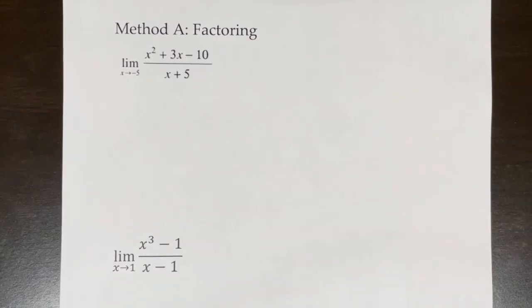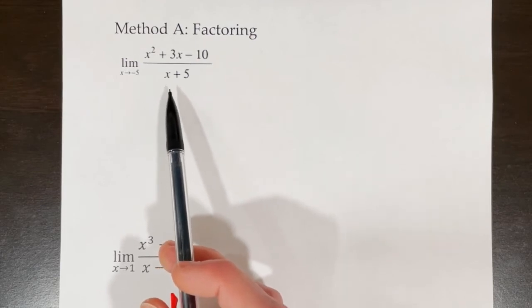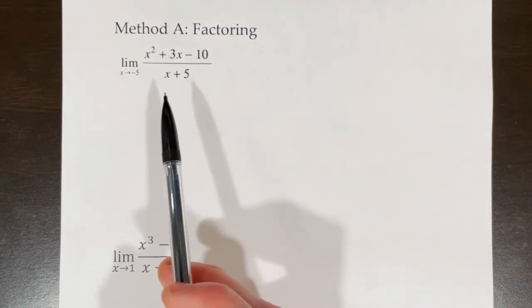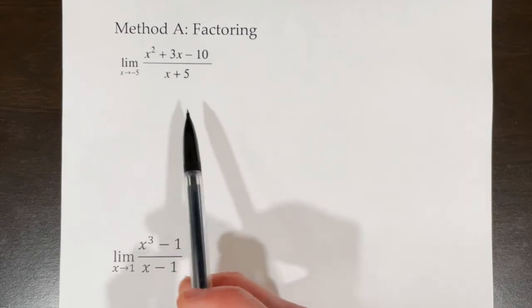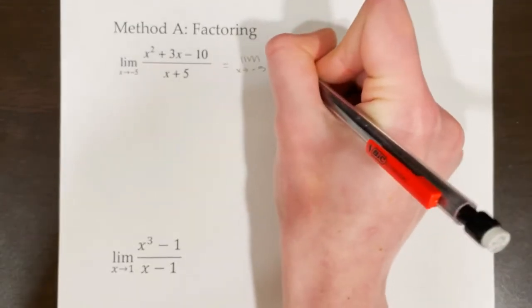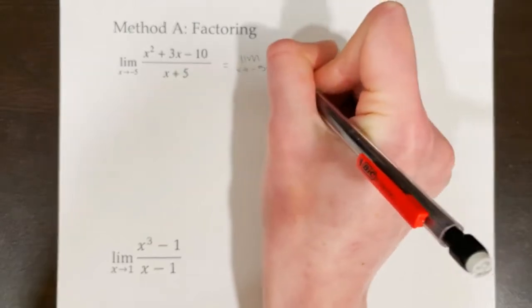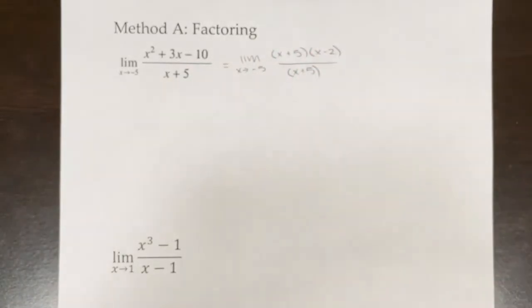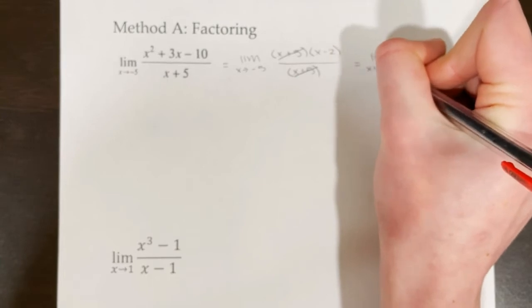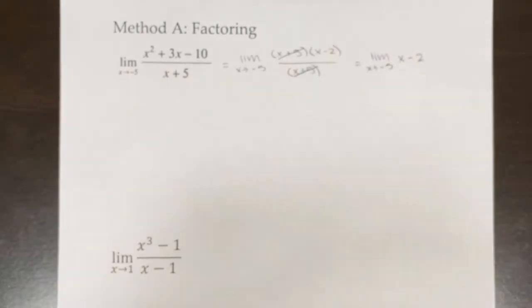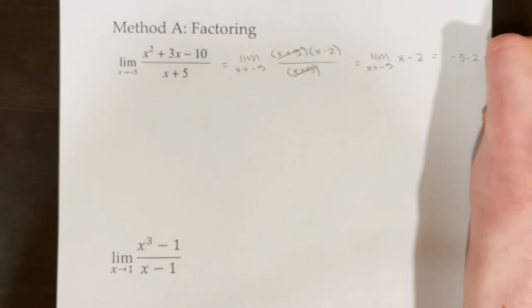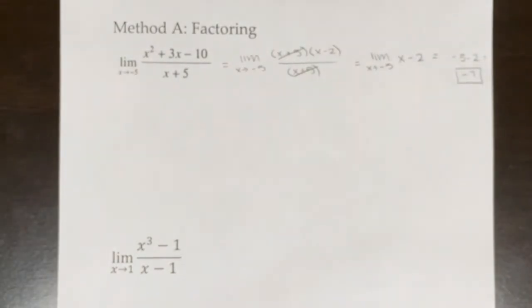Let's try more examples of factoring. If we use direct substitution in this next example without factoring, we get a denominator of negative 5 plus 5, or 0, which gives indeterminate form. So we factor: the numerator becomes x plus 5 times x minus 2 over x plus 5. We cancel the common factor x plus 5, leaving the limit as x approaches negative 5 of x minus 2. Using direct substitution, the limit is negative 7.